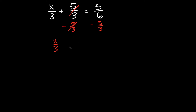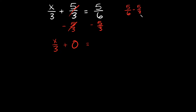Simplifying this, we're just going to have x over 3, and positive 5 thirds minus 5 thirds goes to 0 — these cancel each other out. That's going to be equal to 5 sixths minus 5 thirds, which I'll work out over here.